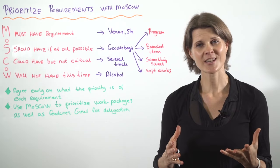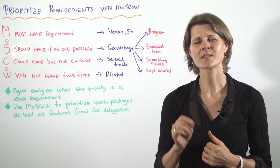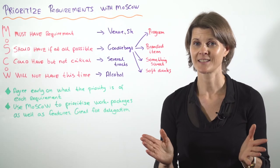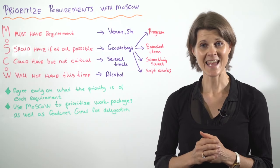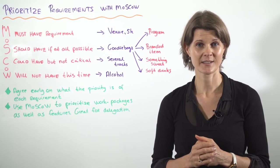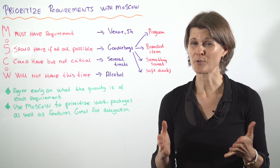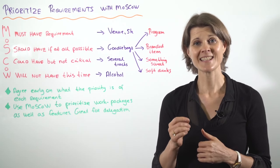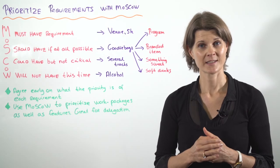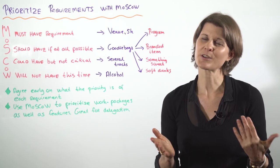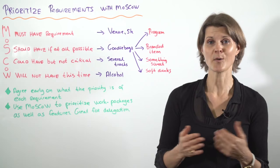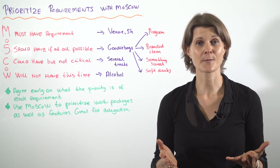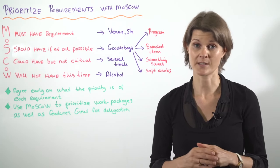In the MoSCoW Technique, the M stands for a must-have requirement — it is non-negotiable, we must have it. The S stands for a should-have requirement; if at all possible we should have it. The C stands for a could-have requirement — it's not essential but we could have it if we have extra time or extra budget. And the W stands for something that we will not have this time around.